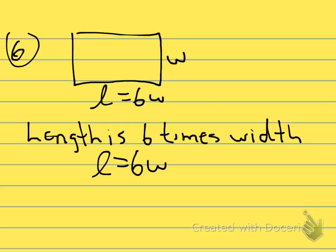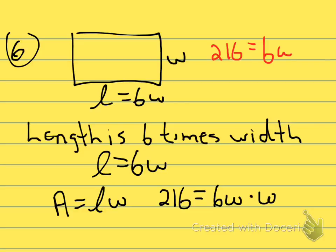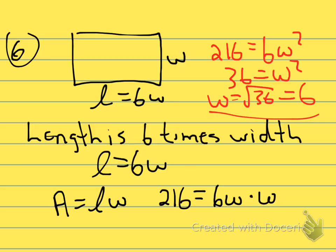Since area is length times width, that means the area given in the problem, which is 216, must equal the length of 6W times the width of W. That's going to give us that, I'm going to go up to the top and work in a little red ink here. That's going to give us that 216 equals 6W squared, divide by 6, 36 equals W squared. So W will be the square root of 36, which is 6. So the width of our rectangle is 6.